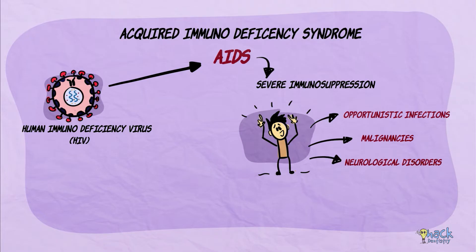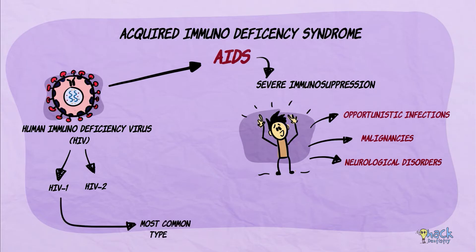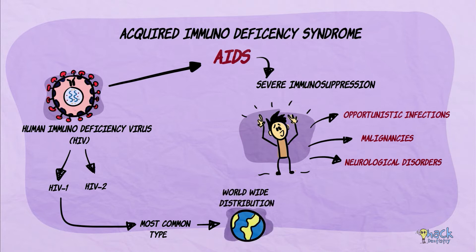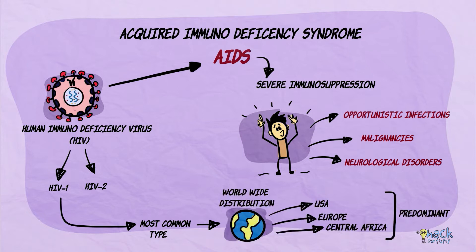There are two different species of HIV: HIV-1 and HIV-2. HIV-1 is the most common type causing AIDS and has a worldwide distribution, predominantly in the United States, Europe, and Central Africa. HIV-2 is mostly found in cases in Western Africa and India.